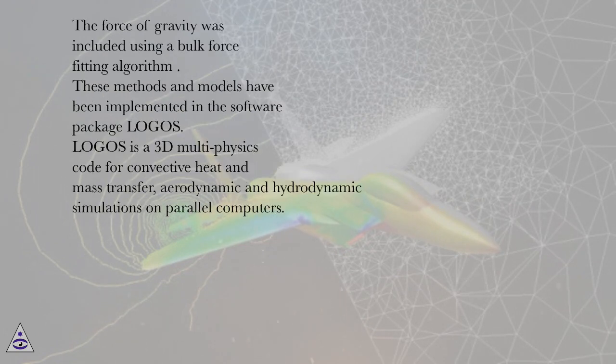The force of gravity was included using a bulk force-fitting algorithm. These methods and models have been implemented in the software package LOGOS. LOGOS is a 3D multi-physics code for convective heat and mass transfer, aerodynamic and hydrodynamic simulations on parallel computers. LOGOS has been successfully verified and demonstrated with sufficiently high efficiency on a number of various hydrodynamic tests, including propagation of gravity waves on a free surface, tsunami, and industry-specific simulations. Speed-up of computations on highly parallel computers is provided by an original implementation of the algebraic multigrid method.